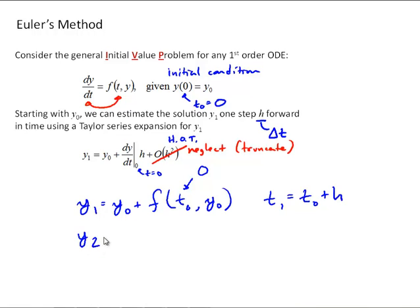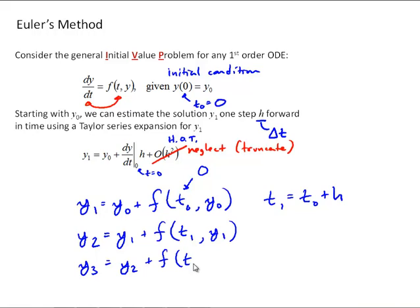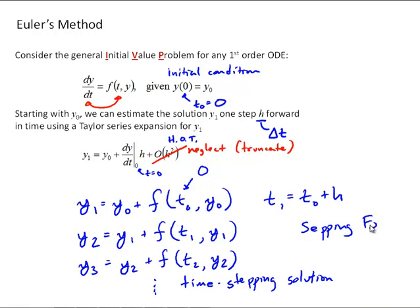Now that we have y1, and t1 is just t0 plus h, we could solve for y2. That's going to be y1 plus the function that defines our differential equation evaluated at t1 and y1. Then we could solve for y3 using y2 plus f at t2, y2, and so on. We would call this a time-stepping solution, stepping forward in time from the initial condition.